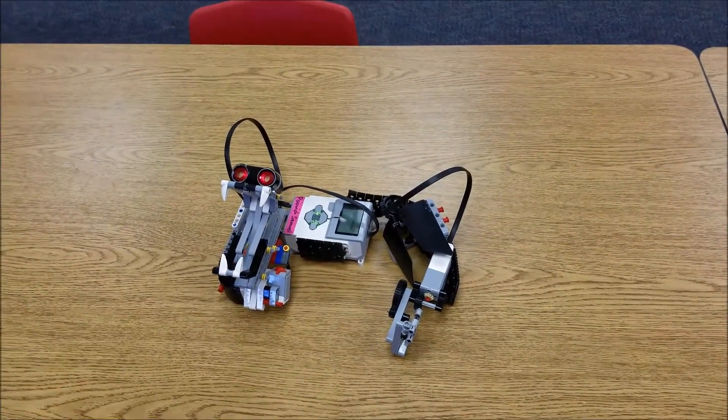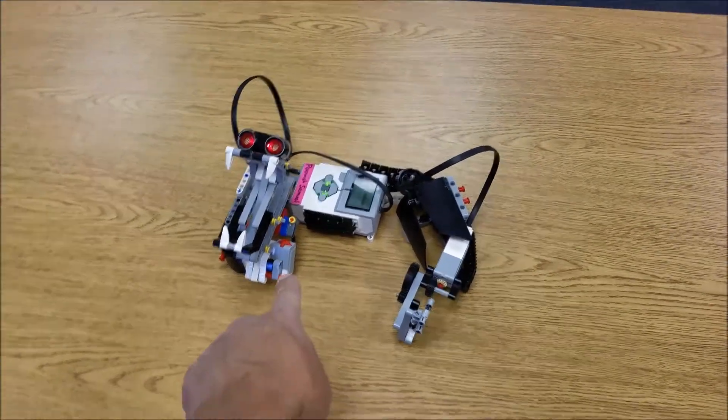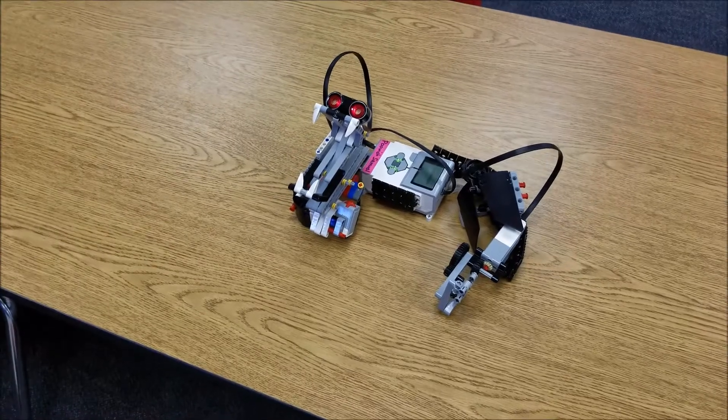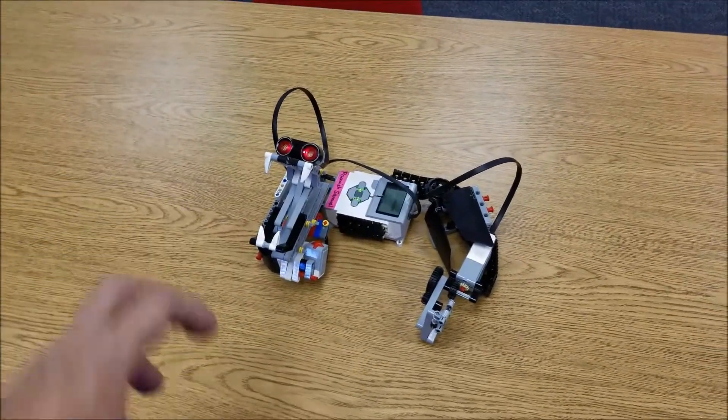And then when I get too close, he will lunge at me. The touch sensor is meant to be for when his neck comes out. It will actually activate the touch sensor for him to kind of recoil and go back.